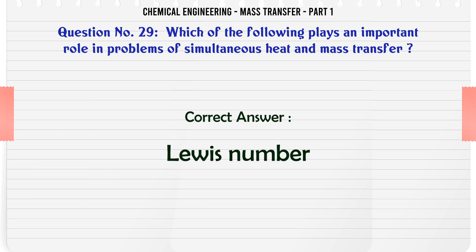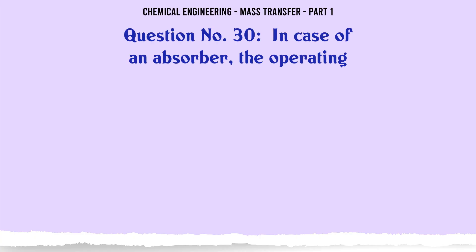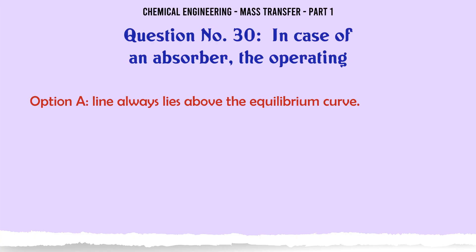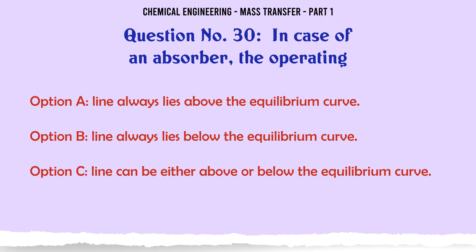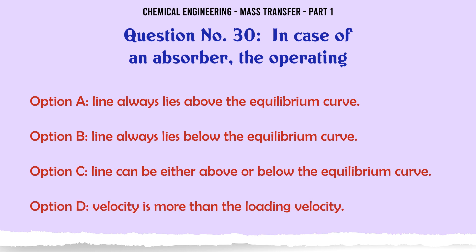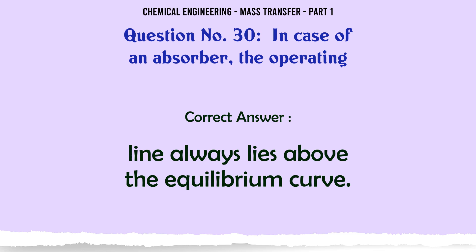In case of an absorber the operating: A. Line always lies above the equilibrium curve. B. Line always lies below the equilibrium curve. C. Line can be either above or below the equilibrium curve. D. Velocity is more than the loading velocity. The correct answer is line always lies above the equilibrium curve.